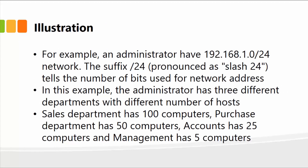Let's walk through an illustration. For example, you're the administrator and you have the IP address 192.168.1, which is a class C IP address if you recall from the previous lessons. I have the /24 network. The suffix 24, pronounced as slash 24 commonly, simply tells the number of bits used for the network address.